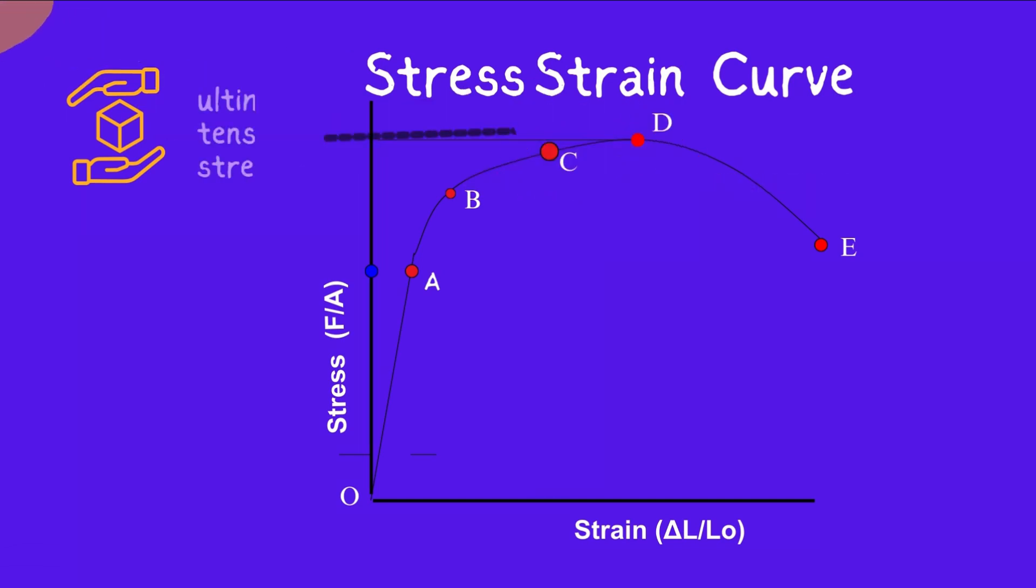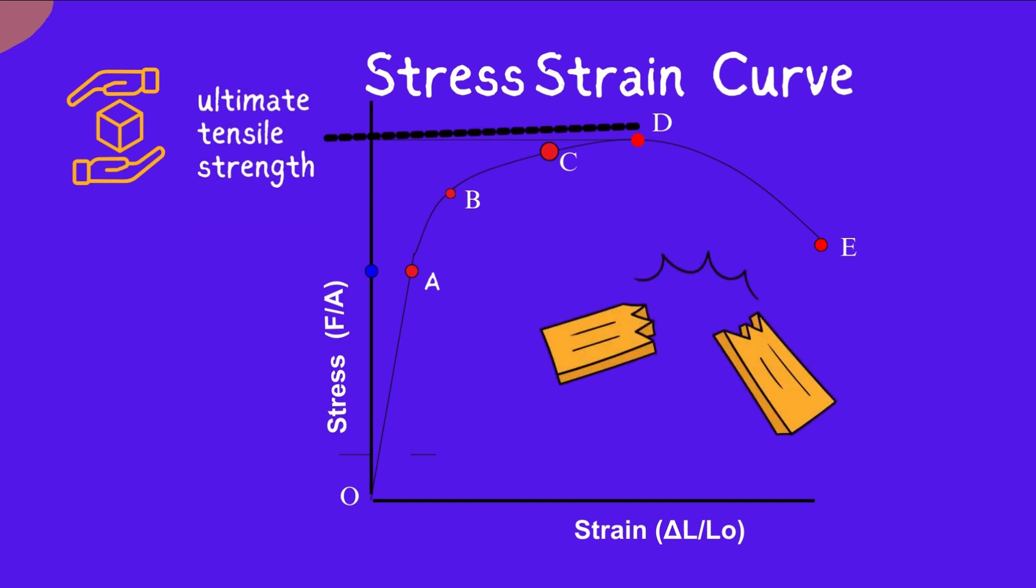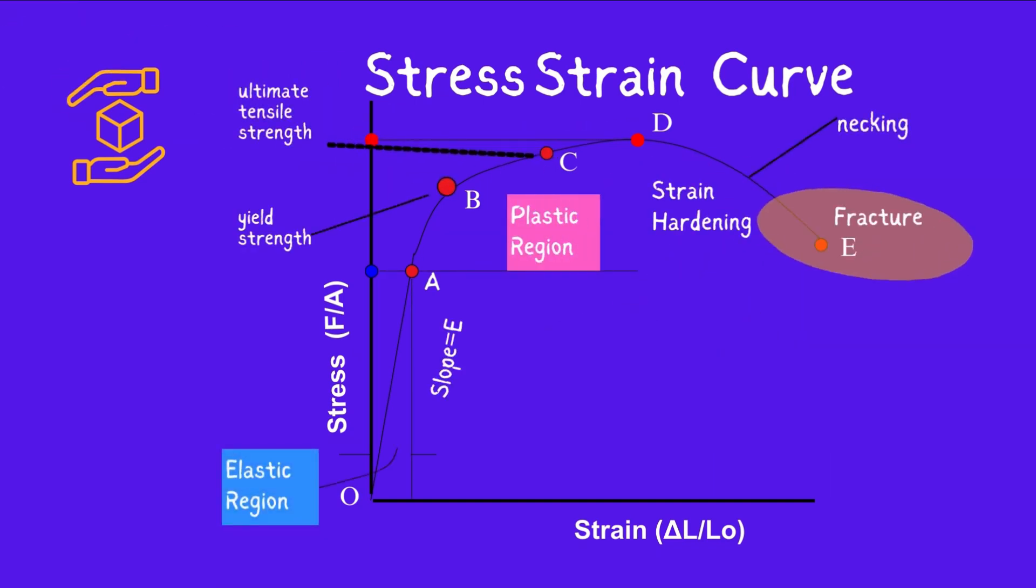Four: Ultimate stress point. It is a point that represents the maximum stress that a material can endure before failure. Beyond this point, failure occurs. Five: Fracture or breaking point. It is the point in the stress-strain curve at which the failure of the material takes place.